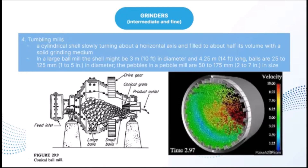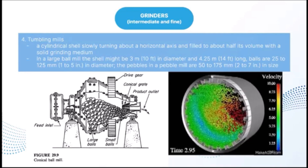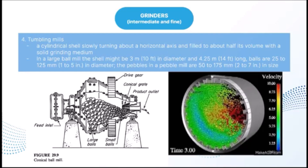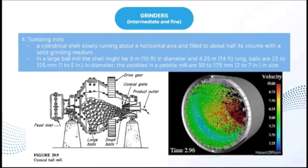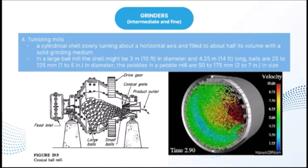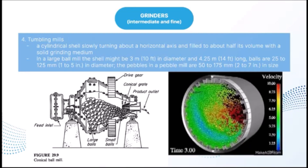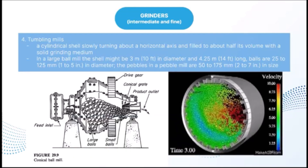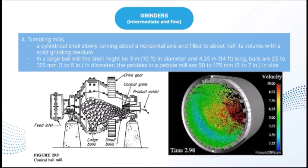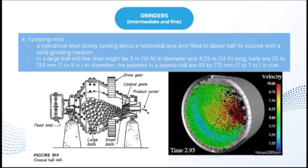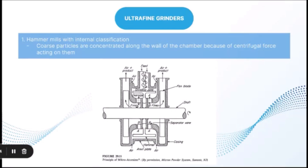A tumbling mill consists of a cylindrical shell slowly turning about a horizontal axis, filled to about half its volume with a solid grinding medium. Grinding elements are carried up the side of the shell and fall on particles underneath, with lifting energy utilized in size reduction. In a rod mill, much of the reduction is by rolling compression and attrition as rods slide and roll over one another. A large ball mill shell might be 3 m in diameter and 4.25 m long, with balls of 25–125 mm diameter. Pebbles in a pebble mill are 50–175 mm in size.